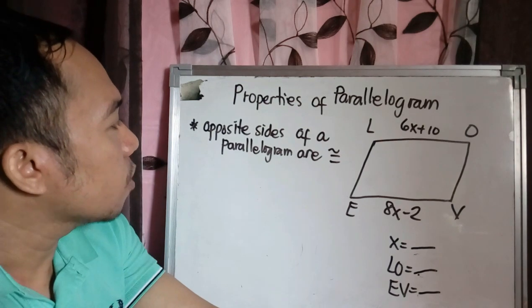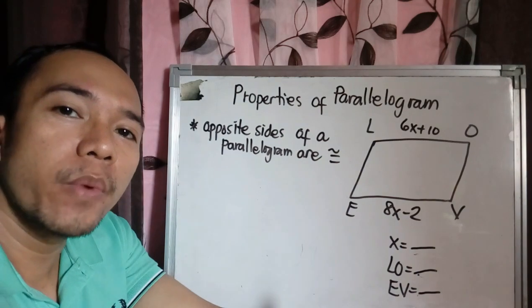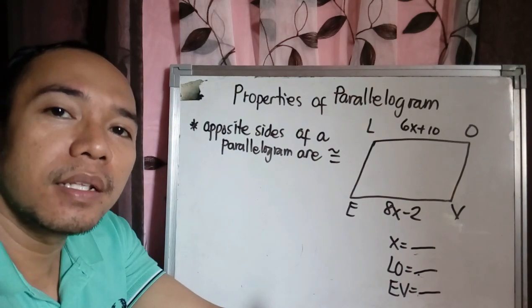The first property is opposite sides of a parallelogram are congruent. When we say congruent, they have equal measurements.